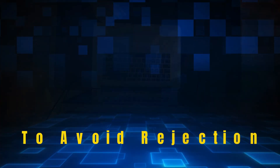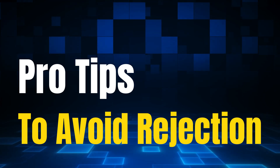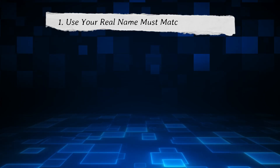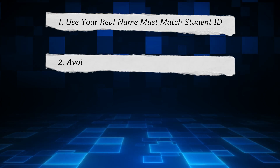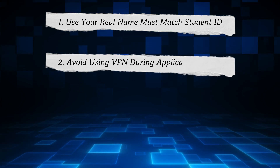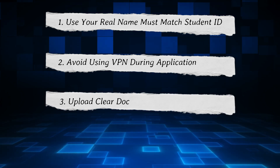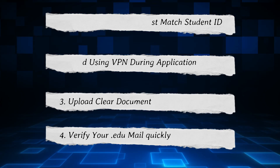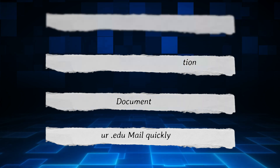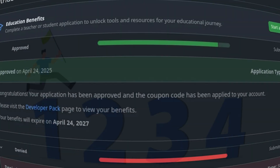Pro tips to avoid rejection — four tips: 1. Use your real name — it must match your student ID. 2. Avoid using a VPN during the application. 3. Upload clear documents. 4. Verify your .edu email quickly. Follow these and your approval rate becomes 100%.